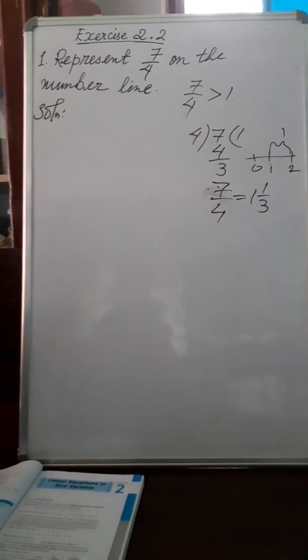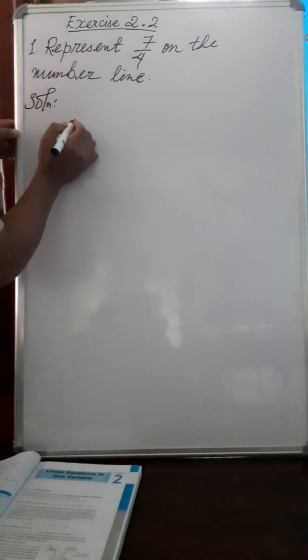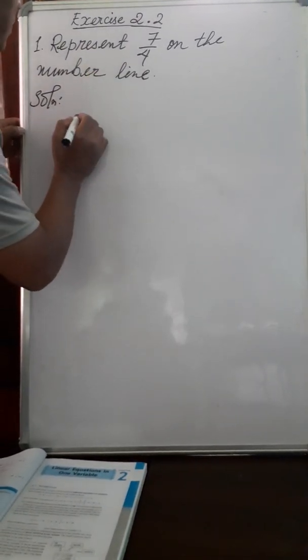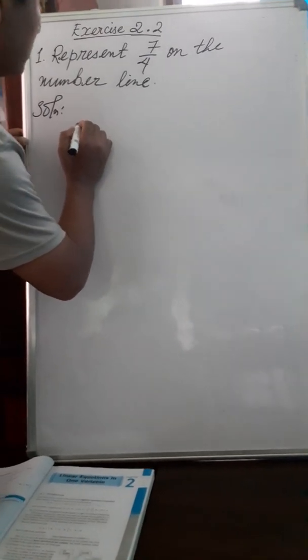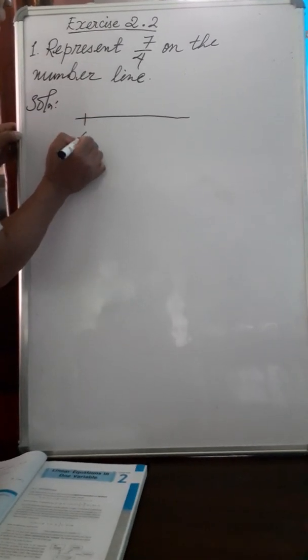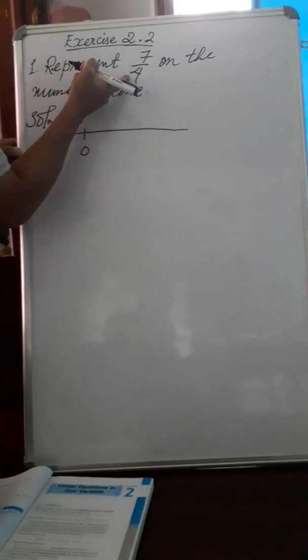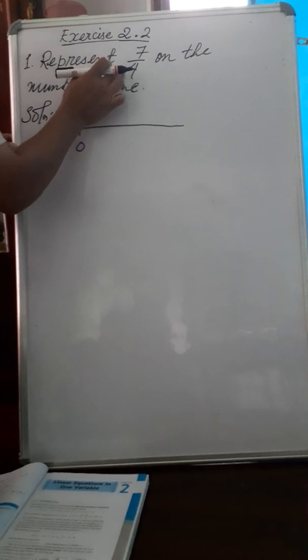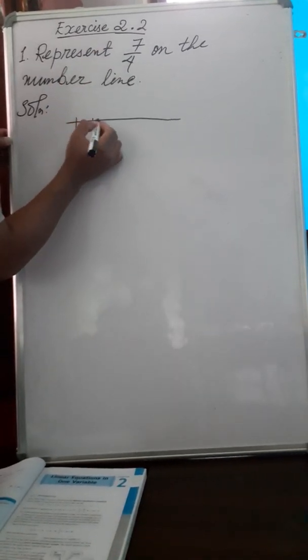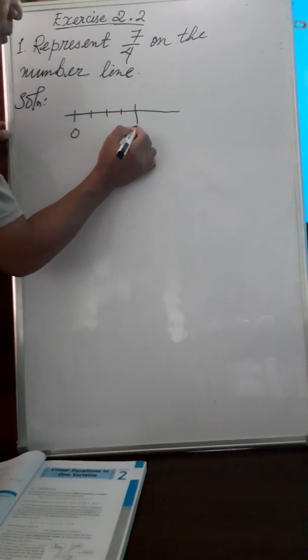Now let us represent 7 by 4 on a number line. Since 7 by 4 means 7 out of 4 equal parts, and it is between 1 and 2, we start with 0 and divide the first unit into 4 equal parts: 1, 2, 3, 4. When we reach 4 parts, that point is 1.